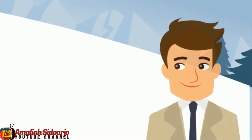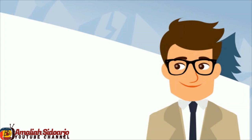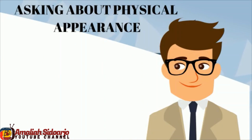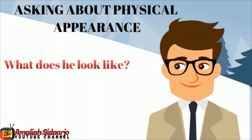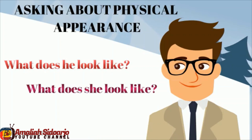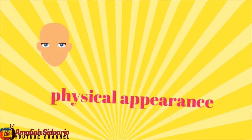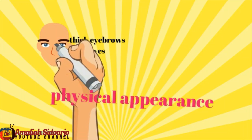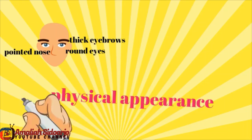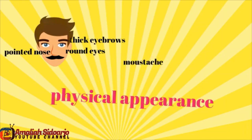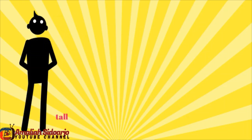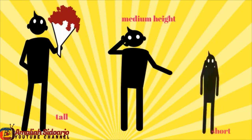If you want to know about someone's physical appearance — whether he's tall or short, fat or skinny — use these questions: 'What does he look like?' or 'What does she look like?' Let's learn about physical appearance adjectives: round eyes, thick eyebrows, pointed nose, mustache, brown hair, tall, medium height, short.